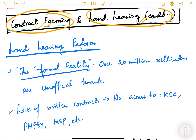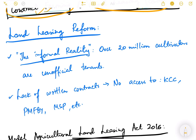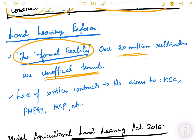Let us first understand what land leasing reforms are. In India there is a lot of unofficial land leasing going on in every state — over 20 million cultivators, meaning more than 2 crores, are unofficial or informal tenants. There is no formal agreement between the actual land owner and the cultivator, and this lack of written contracts leads to no access to Kisan Credit Card, formal credit, Pradhan Mantri Fasal Bima Yojana, or MSP benefits.